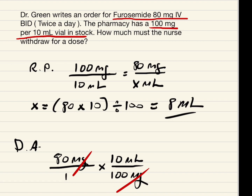We multiply: 80 times 10 is 800, over 1 times 100 is 100. So 800 divided by 100 equals 8 ml, because milliliters is the only unit left after the milligrams cancel out.